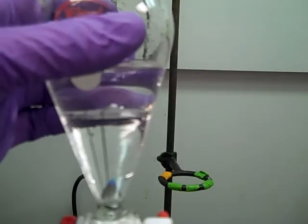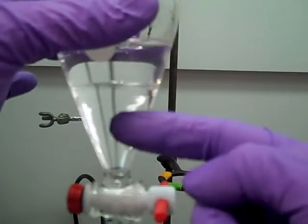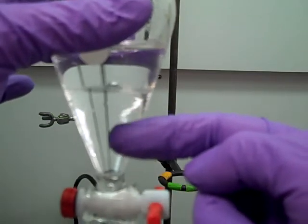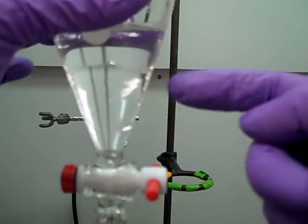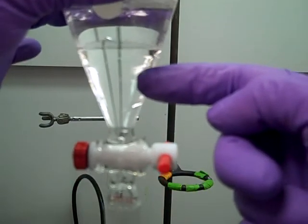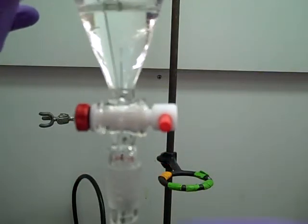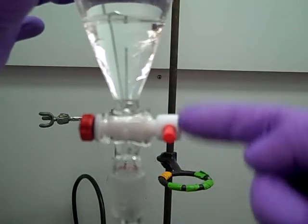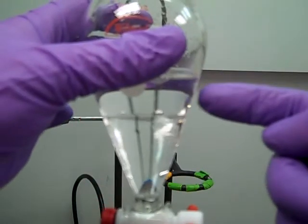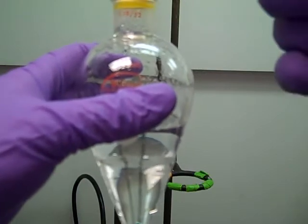So once we've separated our two layers, now we need to get the bottom layer, which in this case is the organic layer, out. So the bottom layer always goes out the stopcock at the bottom. So bottom layer, out the bottom, and then the top layer, which is water in this case, is going to get poured out of the top.